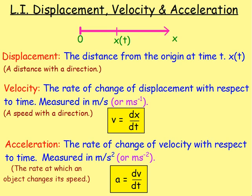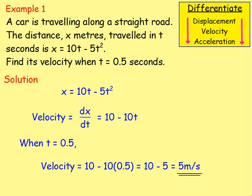We then moved on to displacement, velocity, and acceleration. Displacement is the distance from the origin at time t. Velocity is the rate of change of displacement with respect to time — how quickly you're moving away from a point. Acceleration is the rate of change of velocity with respect to time — how quickly you're changing your velocity. Basically, if you differentiate displacement you get velocity; if you differentiate velocity, you get acceleration.